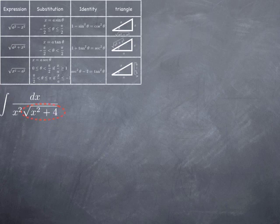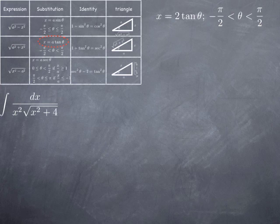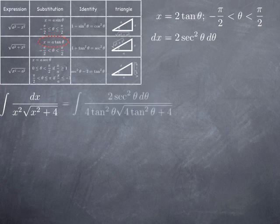Specifically, we have a root of a squared plus x squared, so we're going to parameterize x as a tangent theta, where a is the square root of the positive constant. In this case a should be 2, so we set x equal to 2 tangent theta with the restriction that theta is strictly between negative pi over 2 and pi over 2. In that case, dx is 2 times the derivative of tangent times d theta, giving us 2 secant squared theta d theta. In the integral we replace dx by 2 secant squared theta d theta and x squared by 4 tangent squared theta, both outside and inside the root.